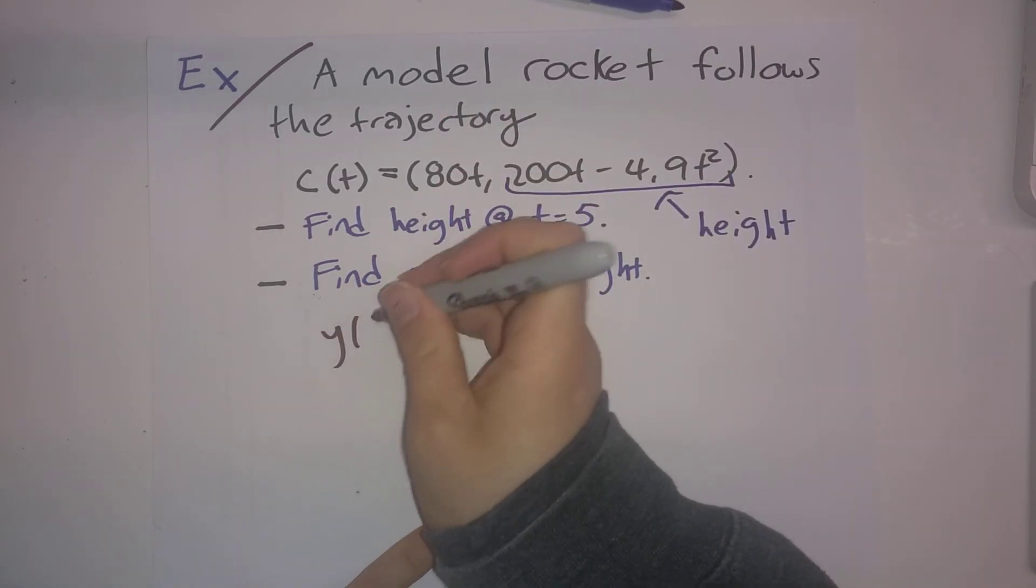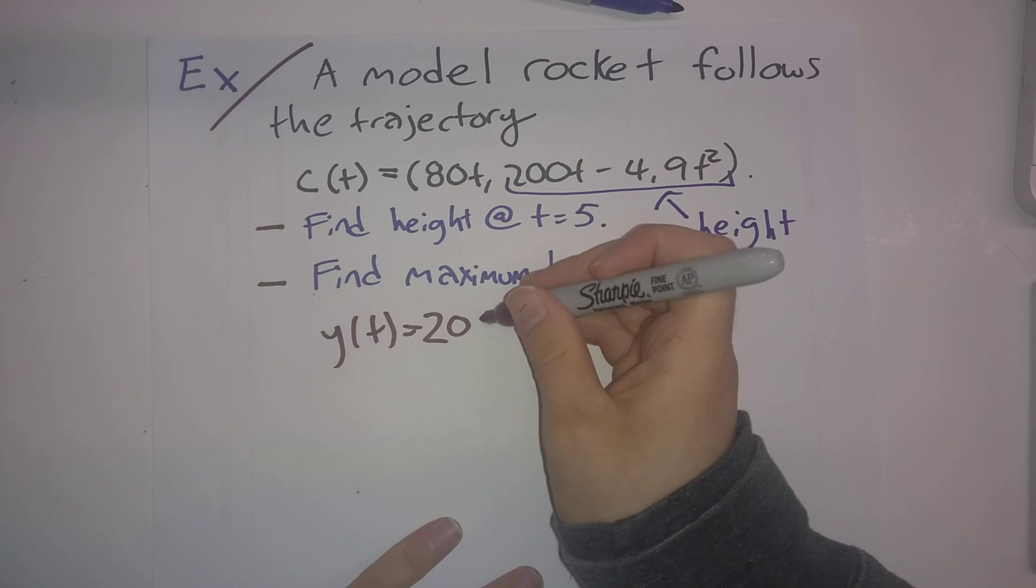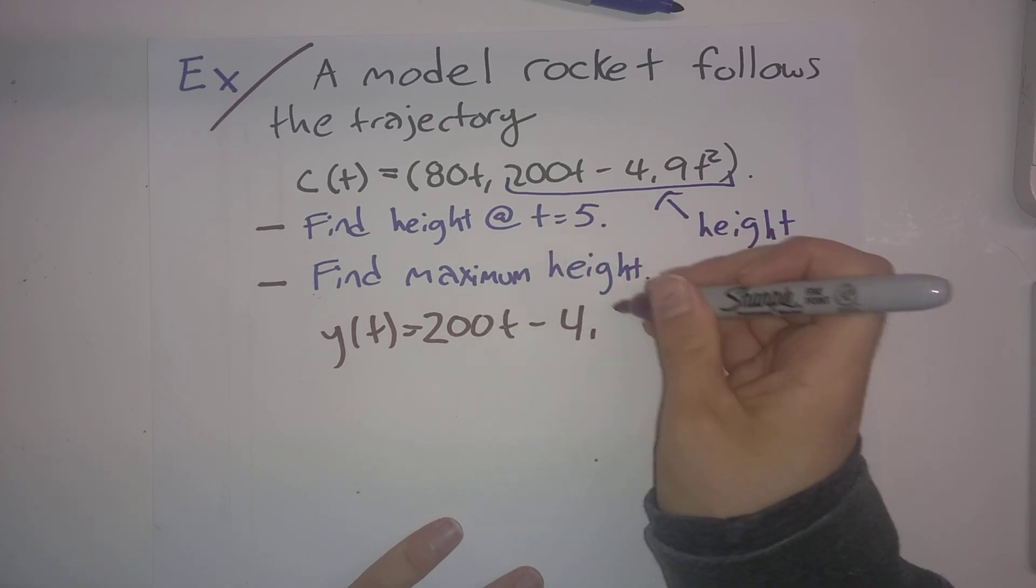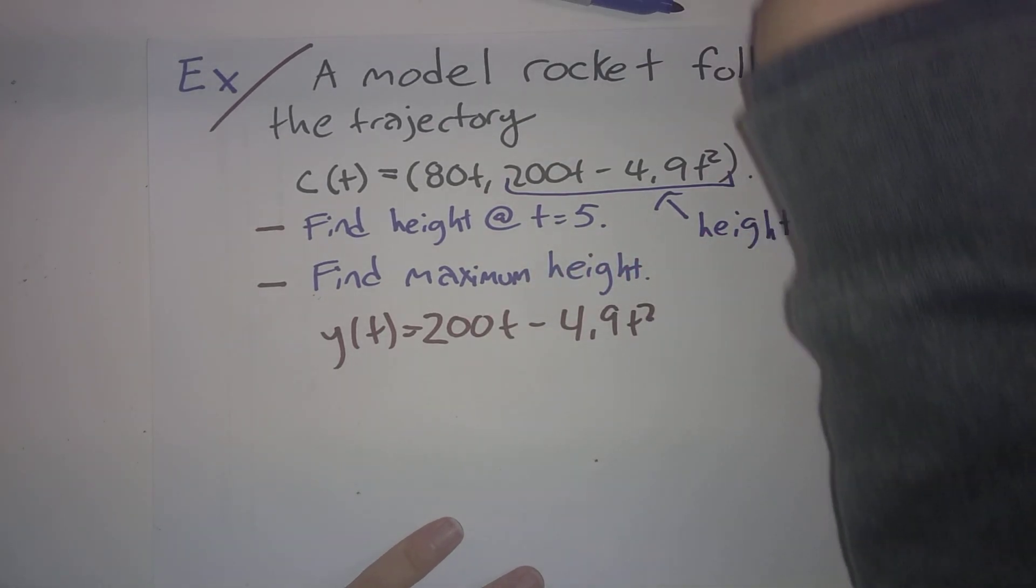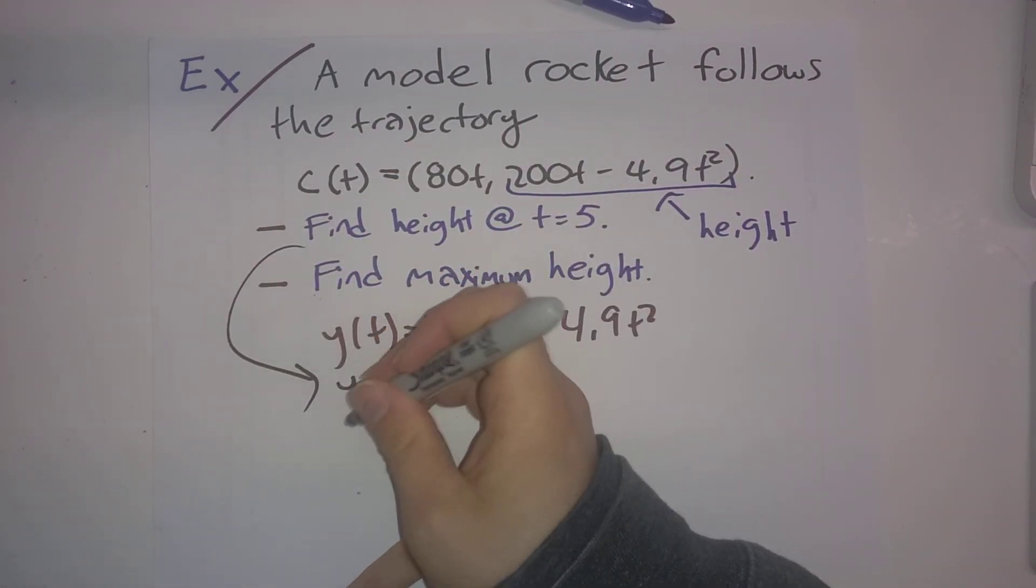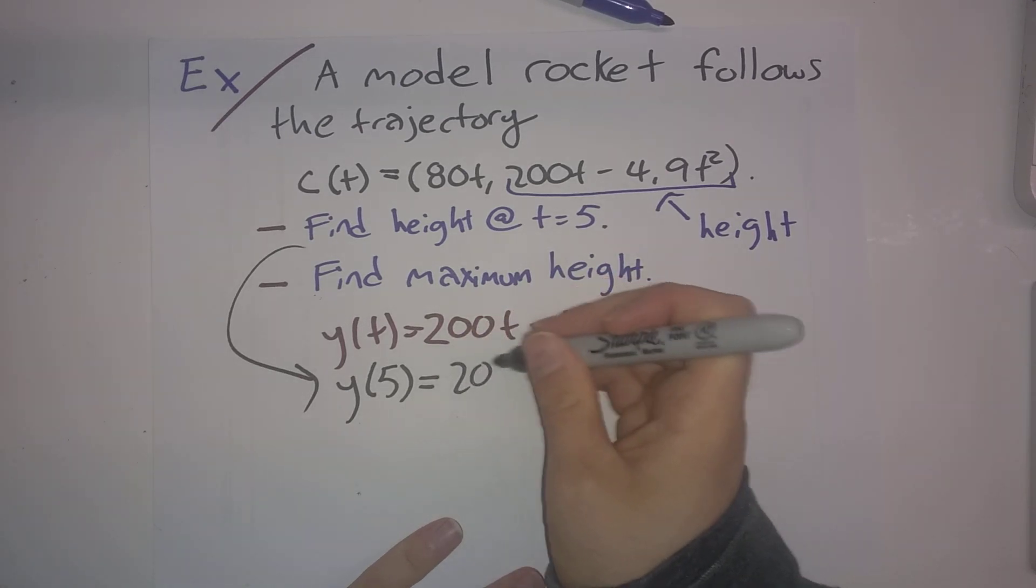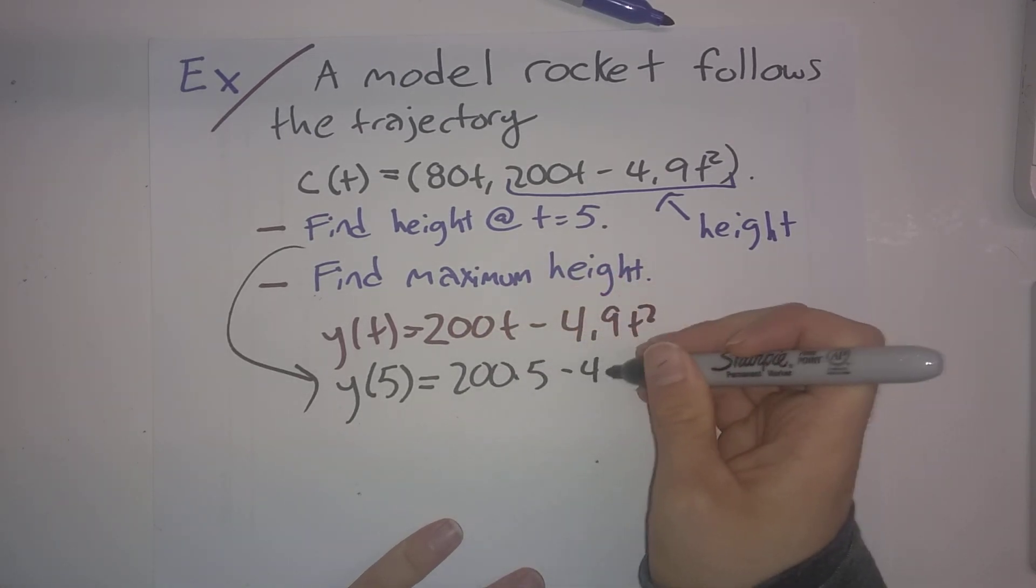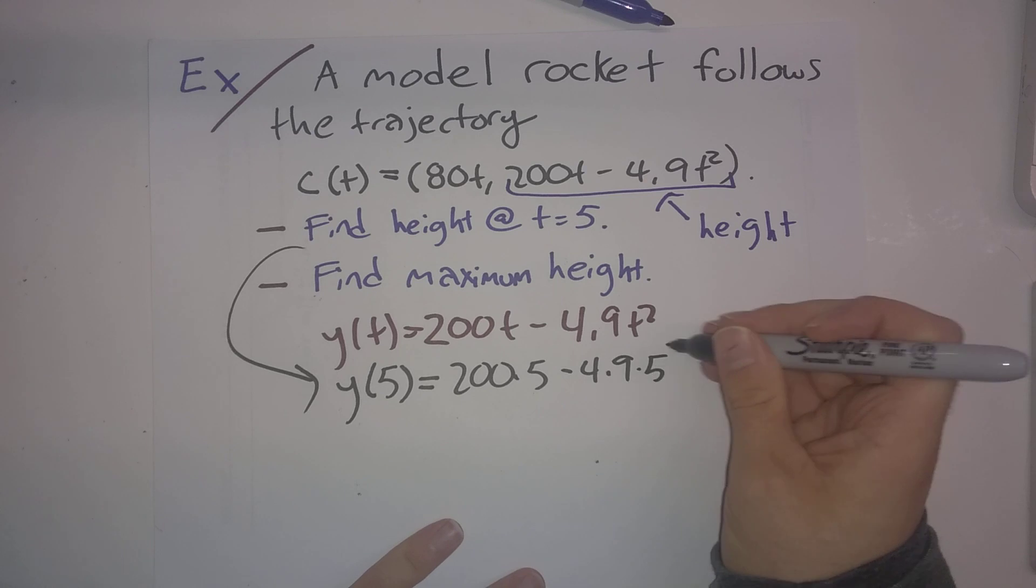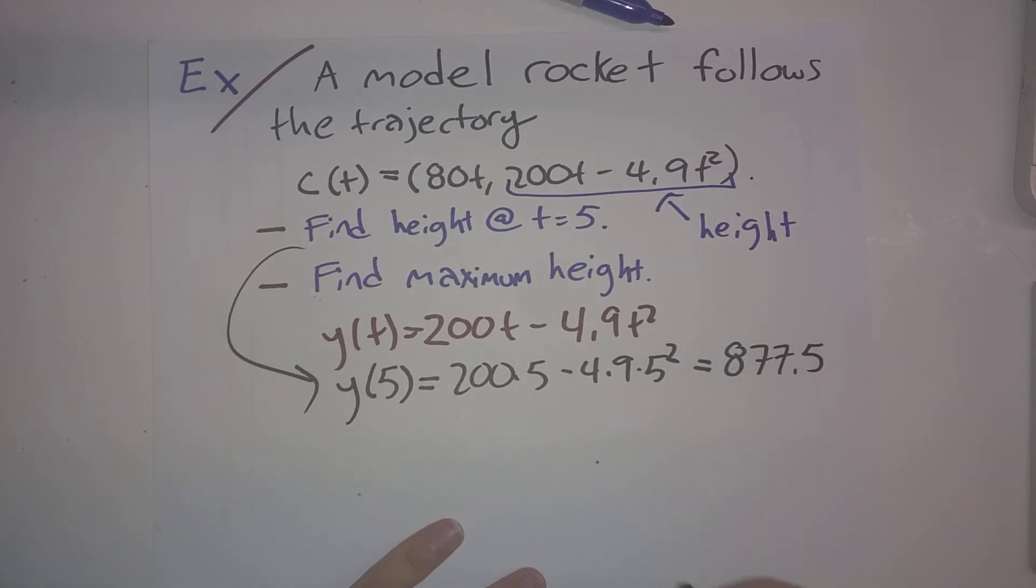So y(t) = 200t - 4.9t². So we want to know the height at t = 5. The answer to this question is just y(5). So 200(5) - 4.9(5)² = 877.5.